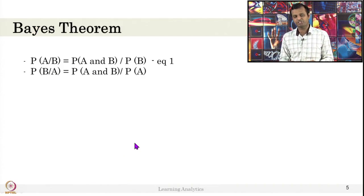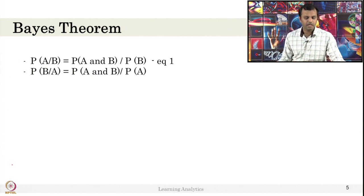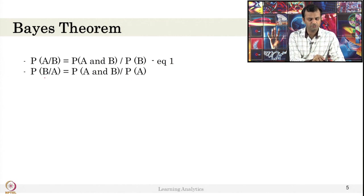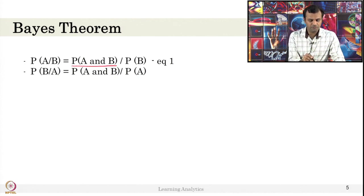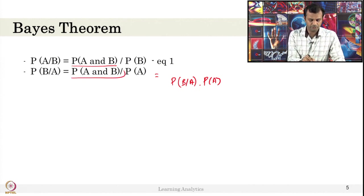Let us look at Bayes theorem from conditional probability. Probability of A given B is probability of A and B — that is equation 1, as you saw in the previous slide. And probability of B given A is also probability of A and B, divided by probability of A. If I want to replace this term with another term, suppose probability of B given A, this term can give probability of B given A into probability of A.